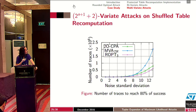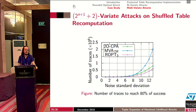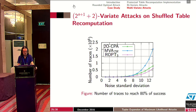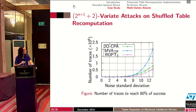Looking at the number of traces needed to reach 80% success as a function of noise standard deviation, in all noise scenarios our new attack is better than the state-of-the-art, as its curve lies below both the multivariate attack curve and the second-order CPA curve.